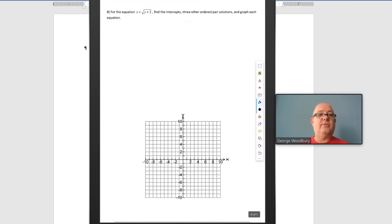Second problem listed as number 8, x equals the square root of y plus 2. So again, we're going to use the same approach. We're going to look for intercepts, and then we'll find three more ordered pairs that work. Start with the x-intercept.